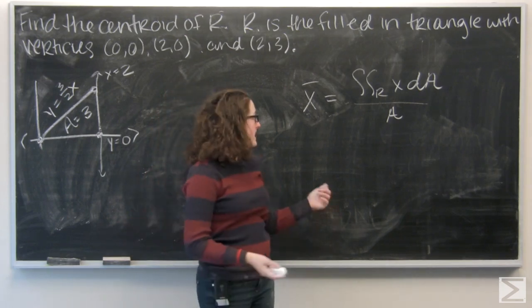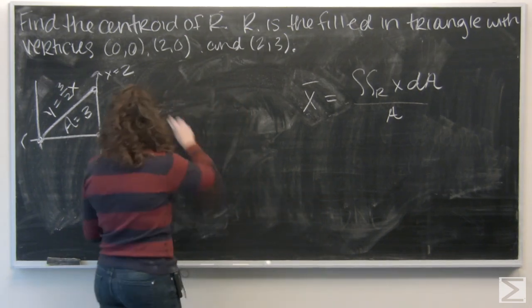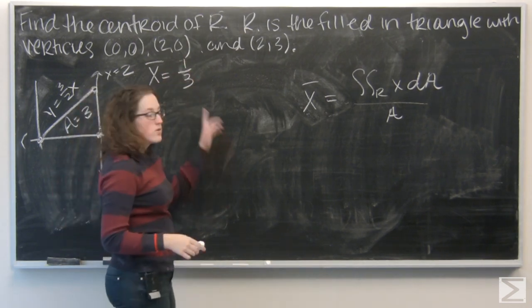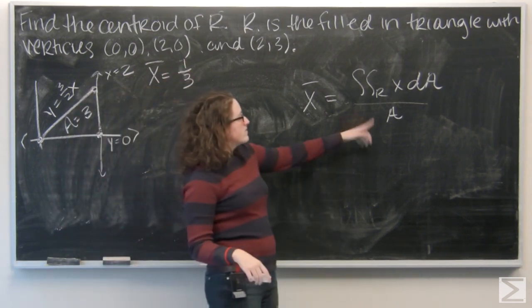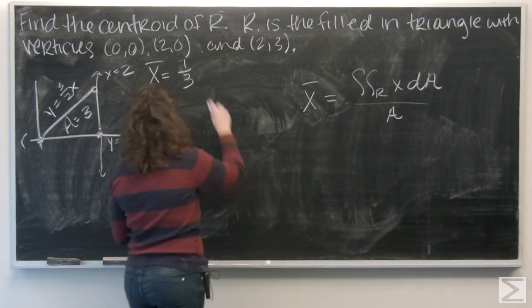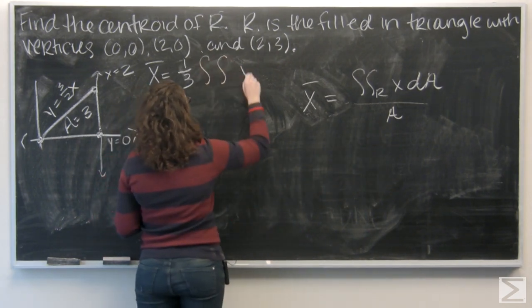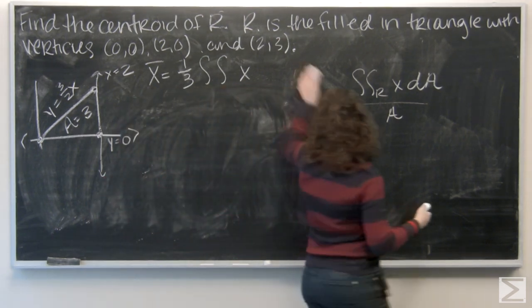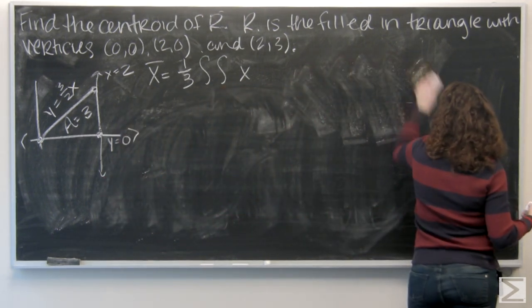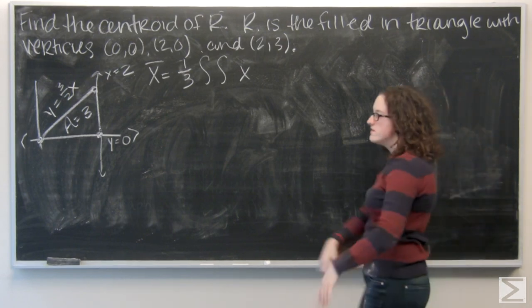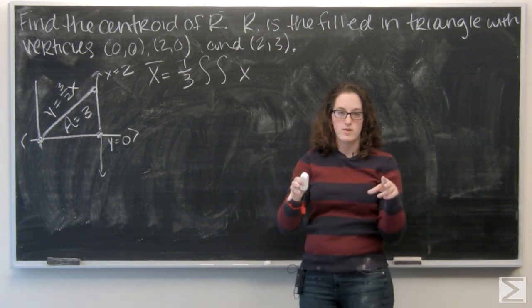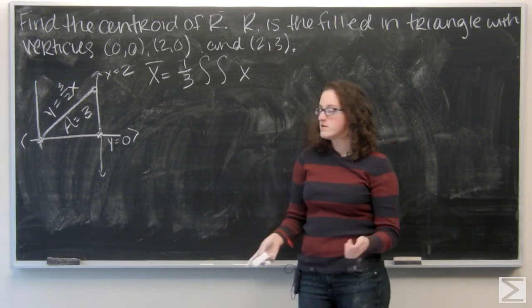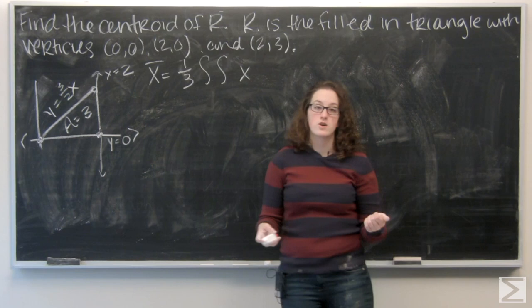So now let's go ahead and set up that integral to find x bar. I'm going to throw a 1 third out in front for my divided by area. So, now I need to set the bounds of integration. I've already figured out the functions that set the area of my triangle. So, I'm probably going to want to integrate with respect to y first. Because one of my y bounds is actually a function of x.